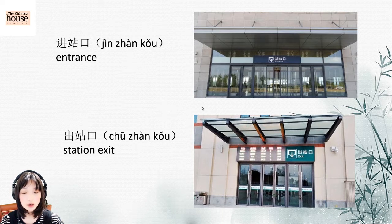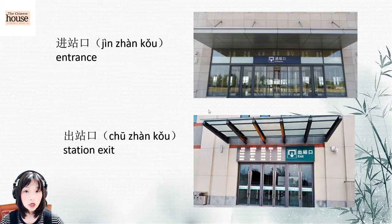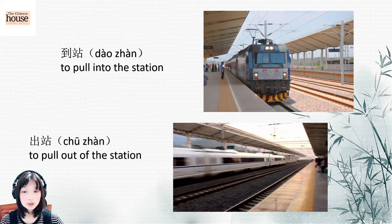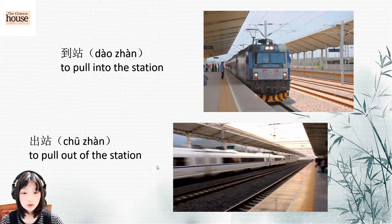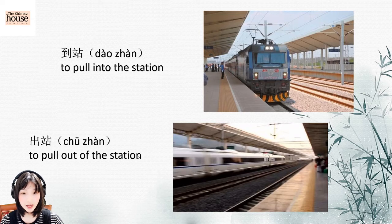Entrance: 进站口 (jìn zhàn kǒu). 进 means get in, 站 means station. 进站口 means entrance. To pull into the station means arrive at the station. And to pull out of the station means leave — 出站 (chū zhàn). 出 means leave, 站 means station.